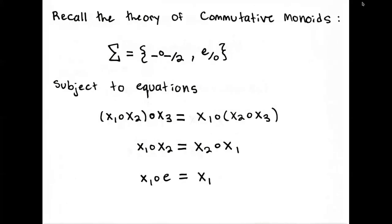For algebraic theories, consider the theory of commutative monoids. The signature has two operations: multiplication, which takes two inputs and gives one output, and the unit constant, which takes zero inputs and gives one output — intended as total functions but for now just syntax. The equations are associativity (x1·(x2·x3) = (x1·x2)·x3), commutativity (x1·x2 = x2·x1), and the unit equation (x1·e = x1).